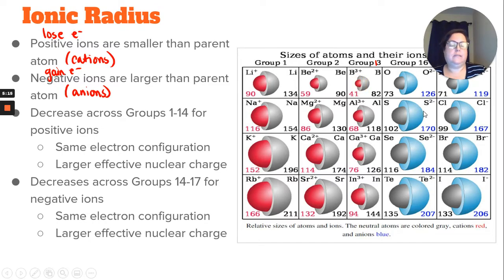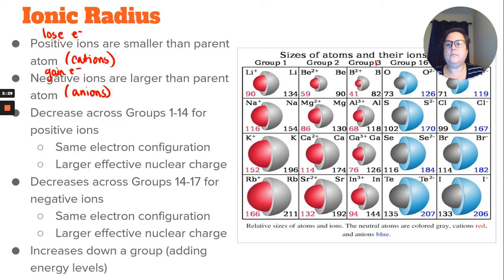As you go from groups 16 to 17, it's getting smaller because it's a larger effective nuclear charge. So again, you have more protons, so they're able to pull those electrons in a little bit easier. If we look down a group, we're still increasing, and that's because you're adding those energy levels.